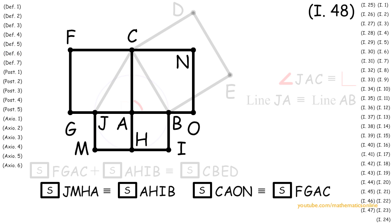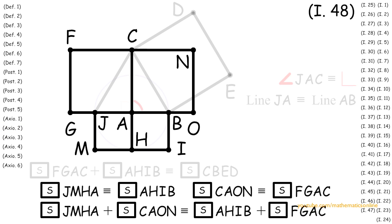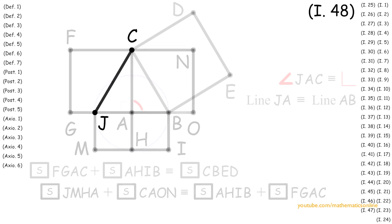Now with the following two facts, we apply Axiom 2 to attain square JMHA plus square CAON is congruent to square FGAC plus square AHIB.